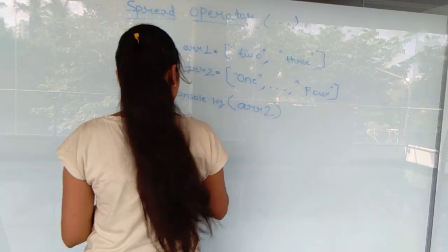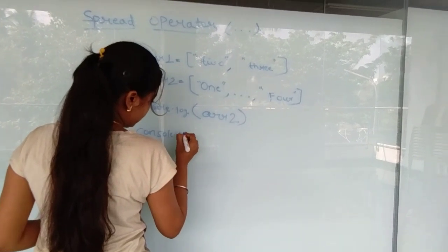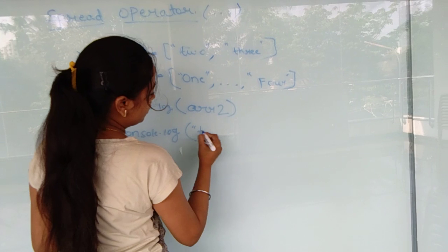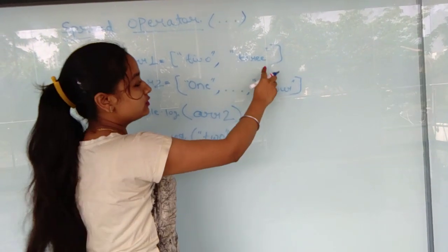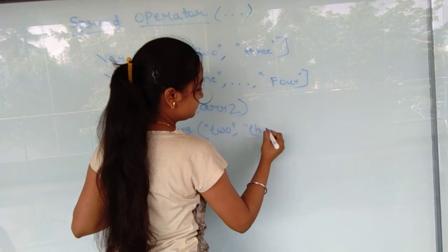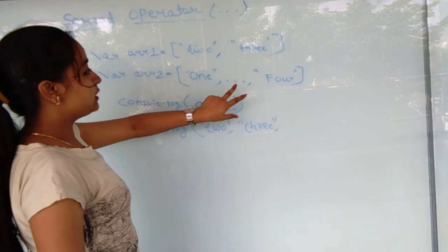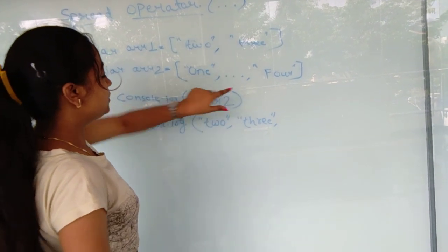Now we will write console.log here. And we will see the output as two, three. Then here we get the output as two, three, one, two.